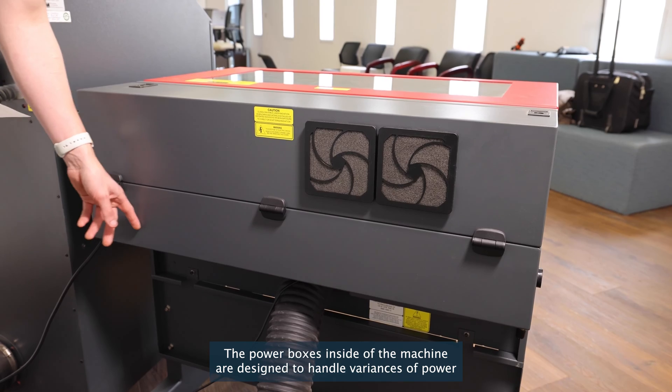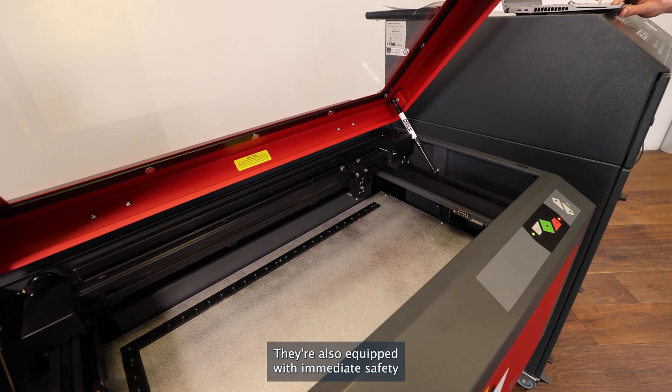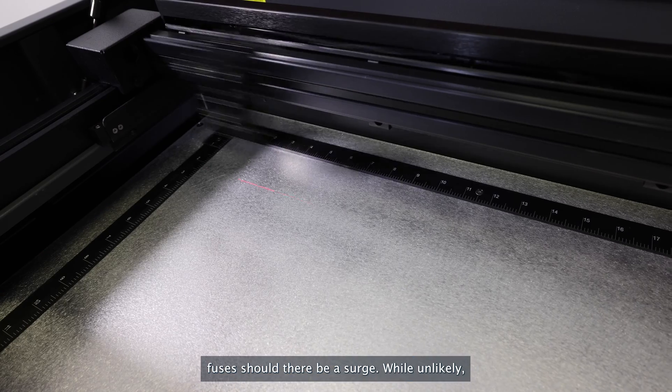The power boxes inside of the machine are designed to handle variances of power within the machine. They're also equipped with immediate safety fuses should there be a surge.